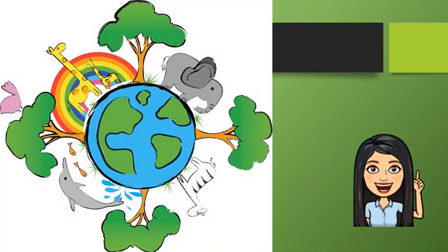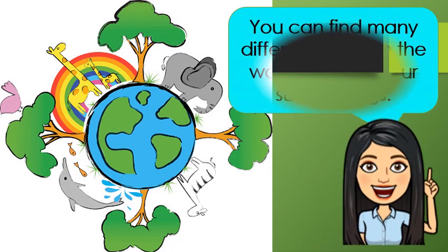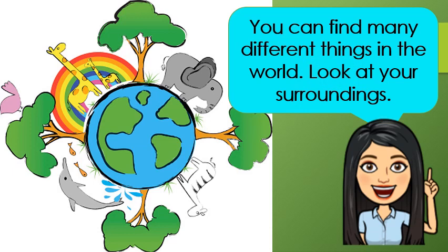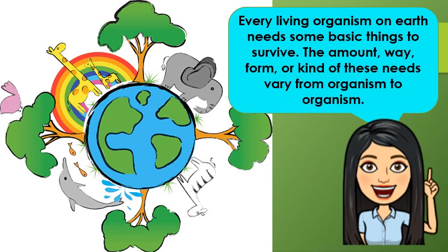Children, I want you to look at your surroundings. You will observe that you can find many different things in our world. Every living organism on Earth needs some basic things to survive. The amount, way, form, or kind of these needs vary from organism to organism.